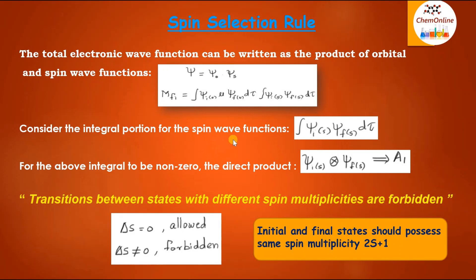Consider the integral portion for the spin wave functions: integral of ξiS · ξfS dτ. For this integral to be non-zero, the direct product of the two spin wave functions ξiS into ξfS should contain the totally symmetric representation A1. For the direct product to be totally symmetric, that is possible only if ξI and ξF span the same symmetry species. In other words, the initial and the final wave functions should have the same overall spin quantum number S.